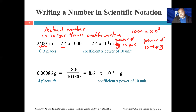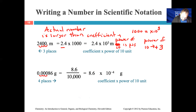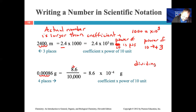So we get 2.4 times 10 to the third. When there's no plus or minus next to the power of 10, that means it's positive — 2.4 times 10 to the plus third. Now let's look at the second example: 0.00086 grams. To get this number to a value between 1 and 10, we move the decimal point four places to the right — one, two, three, four — giving us a coefficient of 8.6. To transform 8.6 back into 0.00086, we would divide by 10,000, which is the same as multiplying by 10 to the minus fourth power.